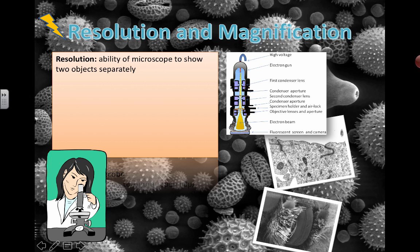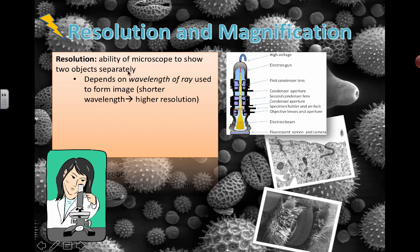The definition of resolution is the ability to show two objects separately. When you zoom in to this computer screen, you'll get to a point where you can only see tiny pixels. On a Retina MacBook display there are more, tinier dots so you can zoom in further and it looks smoother. Basically, the resolution in terms of microscopes depends on the wavelength of the ray being used to form the image — the shorter the wavelength, the higher the resolution.